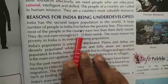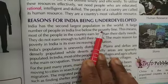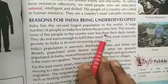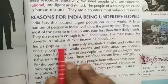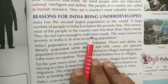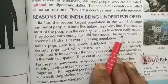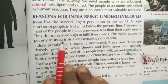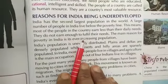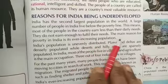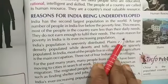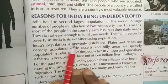India janasankhya mein doosre sthan par hai poore vishwa mein. Bahut saare log bharat mein below poverty line — gareebi rekha ke neeche jeevan beetit kar rahe hain. Bahut saare log desh mein earn less than their daily needs — apni aavashyaktaon se kam kama paate hain. Vo paryapt nahi kama paate hain apni zaruraton ko poori karne ke liye. Main reason bharat mein garibi ka — it is the ever-increasing population.